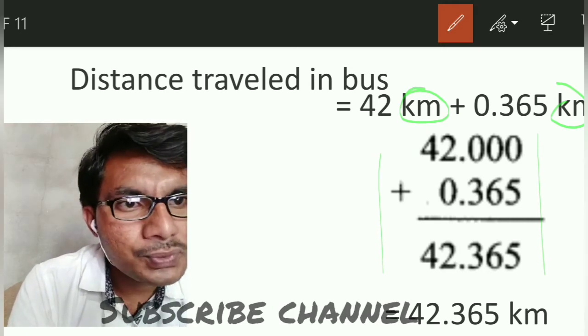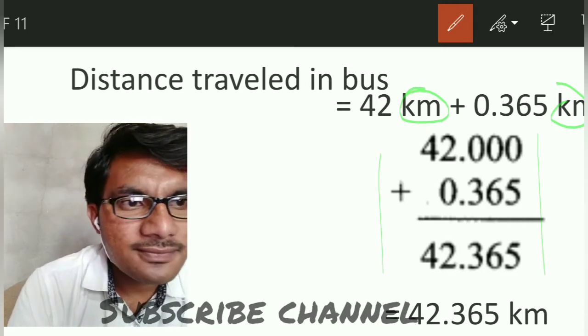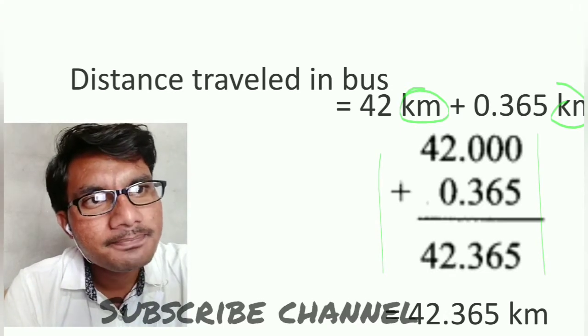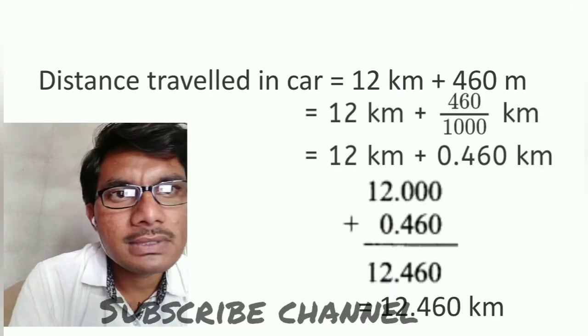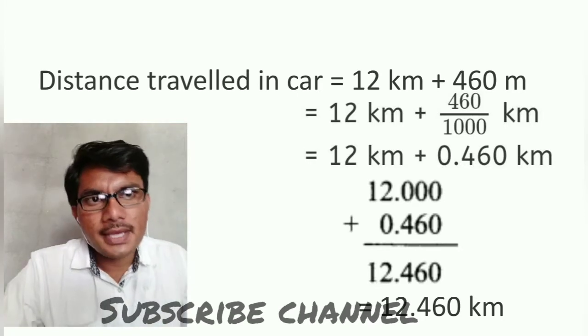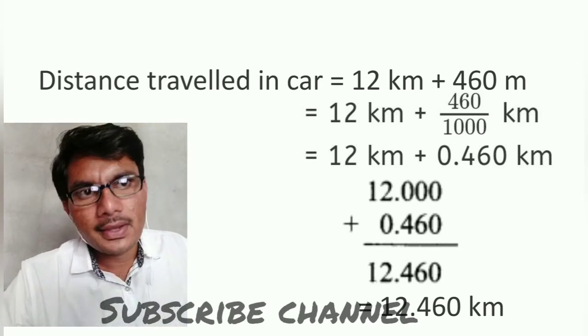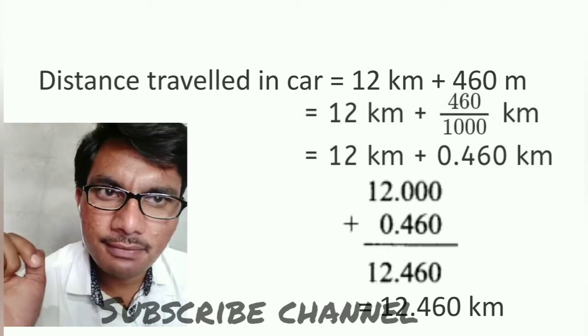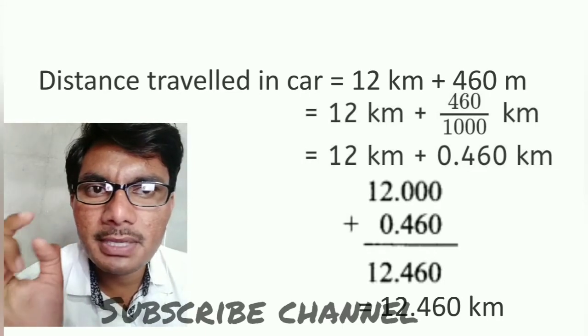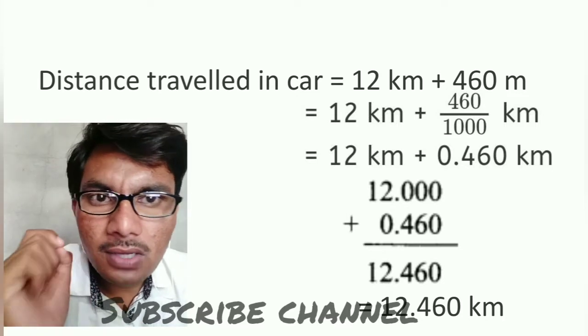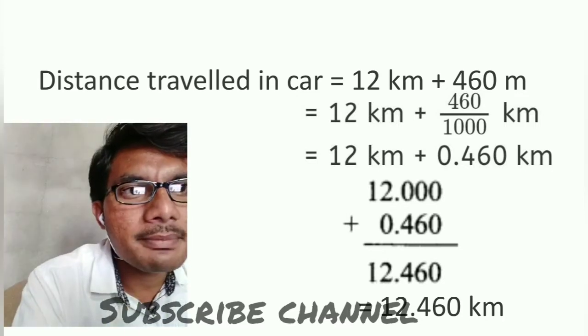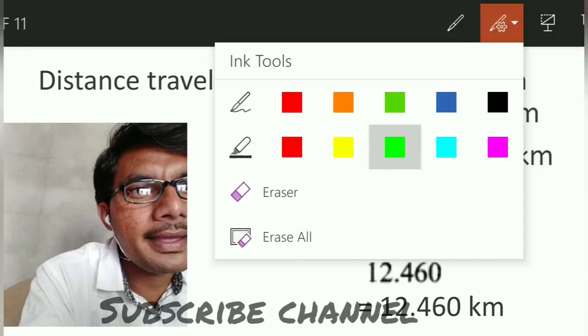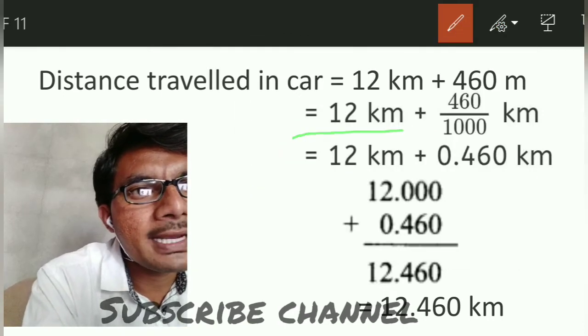Now for distance traveled by car, 12 kilometers and 460 meters are given. Converting 460 meters to kilometers by dividing by 1000.